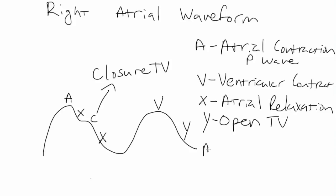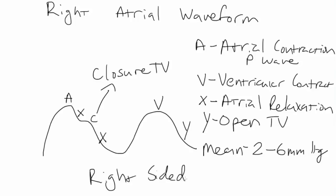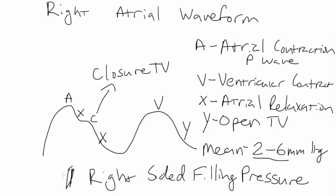The other things that you should know are that the mean pressure for the right atrium, depending on where you look, should be somewhere on the order of 2 to 6 millimeters of mercury. Remember that this is also referred to as the right-sided filling pressure. Often people talk about right and left-sided filling pressures, so this is the right-sided filling pressure. Above 6 would be elevated right-sided filling pressure.